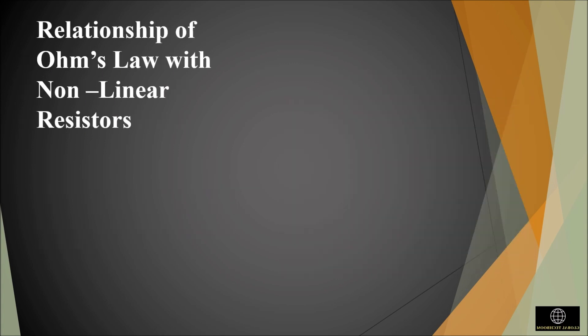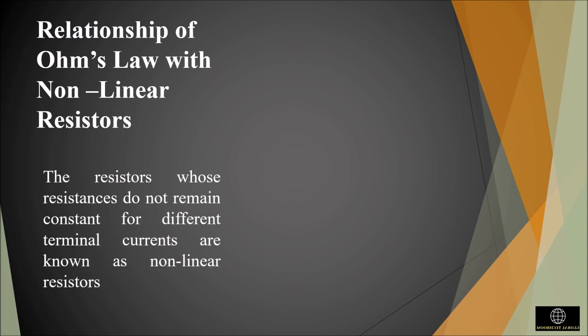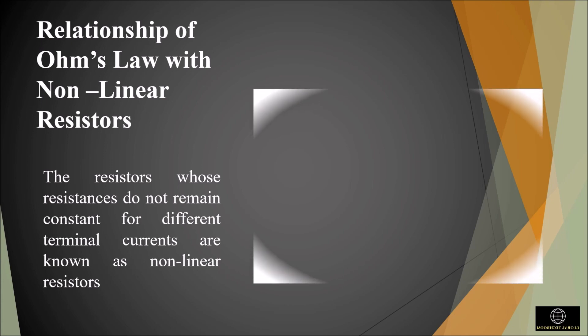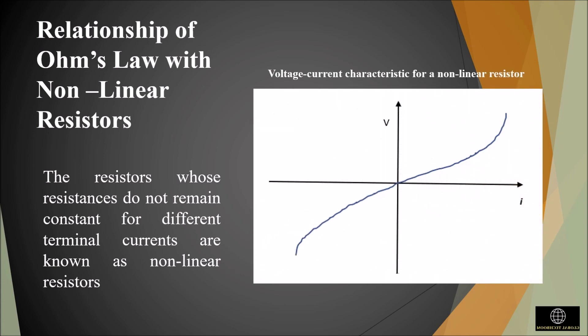Now consider the case of nonlinear resistors. The resistors whose resistance value does not remain constant for different terminal currents are known as nonlinear resistors. A voltage-current characteristic graph is shown here. From the graph, we can see that the graph is no longer a straight line, as the resistance is not a constant value. So we can say that any electric devices or components that obey Ohm's law are said to be Ohmic in nature if the current flowing through it is proportional to the voltage across it. The devices that do not obey Ohm's law are said to be non-Ohmic in nature.